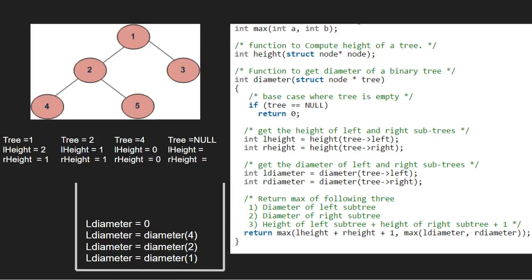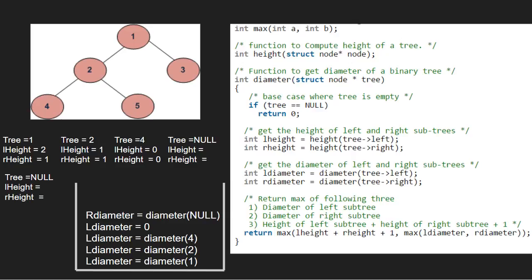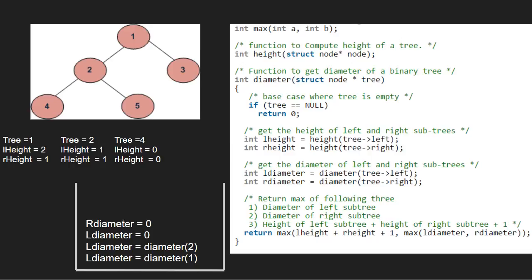We continue for the right subtree of node 4. Since that is also null, we pass null and return 0. So r_diameter will be equal to 0. Now we return the max of l_diameter, r_diameter, and l_height plus r_height plus 1. Since all are 0 for node 4, we return 0 plus 0 plus 1. So l_diameter for node 2 will be 1.